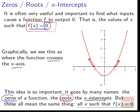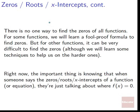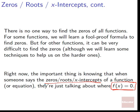These terms — zeros, roots, x-intercepts — all mean the same thing: the x values such that f(x) = 0. There's no single method to find zeros for all functions. For some we'll have foolproof formulas; for others it can be very difficult. But right now the important thing is knowing that when we say zeros, roots, or x-intercepts of a function or equation, we're just talking about where f(x) = 0.